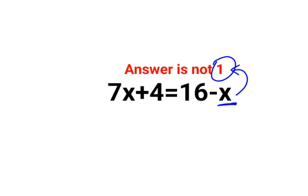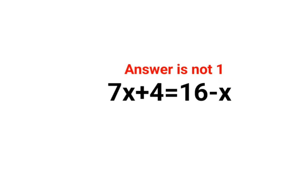Now if you look at it from this perspective — whenever you have an algebraic equation, meaning an equation which involves variables as well as numbers, your first job is to shift all the variables to one side. So first, we'll add x on both sides.